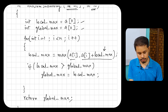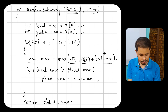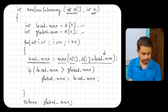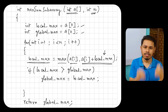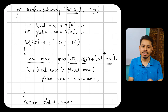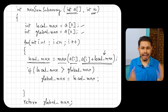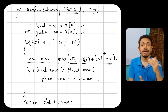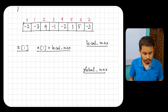This simple line — local_max = max(a[i], a[i] + local_max) — is the fundamental line of the entire algorithm. Except for this line, the algorithm has nothing else. This single line captures the intuition behind how Kadane's algorithm works and also illustrates the very basic intuition of how dynamic programming works.